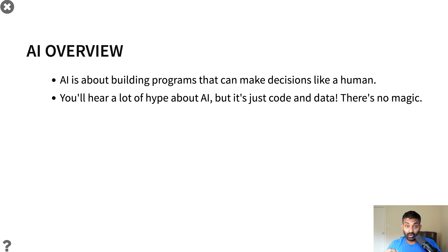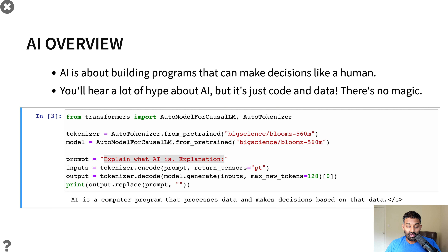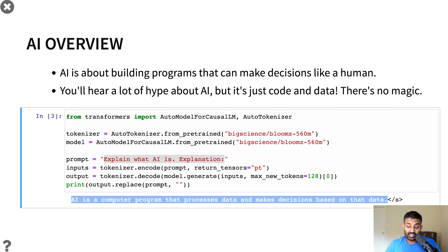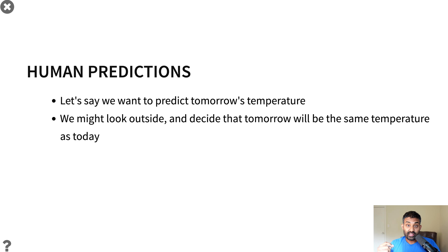AI is all about building programs that can make decisions like a human. You'll hear a lot of hype about AI, but it's really just code and data — there's no magic involved. I wrote some code that loads a pre-trained deep learning model by an organization called Big Science and asks the AI to explain what AI is. The output is that AI is just a computer program that processes data and makes decisions.